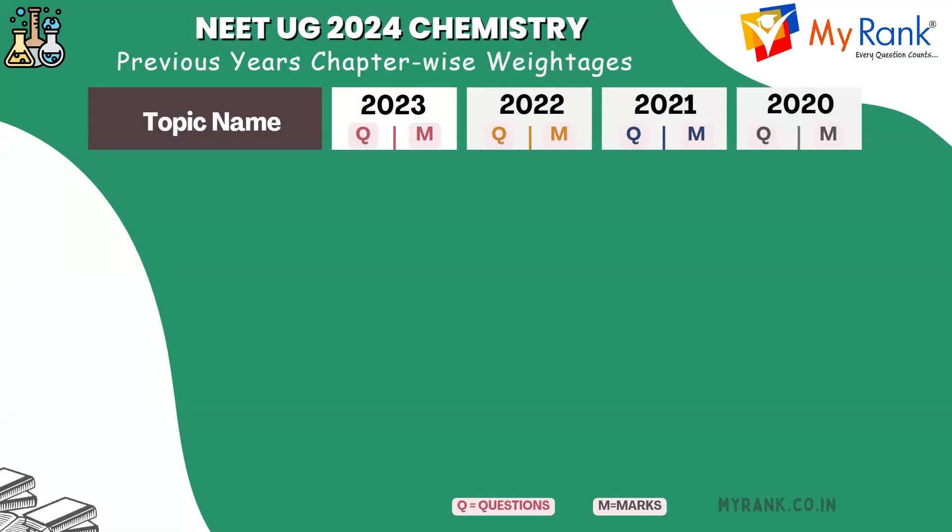We are going to discuss chapter-wise weightage for the subject of Chemistry, covering the NEET UG question papers from the last 4 years: 2023, 2022, 2021, and 2020. Here are the topics.